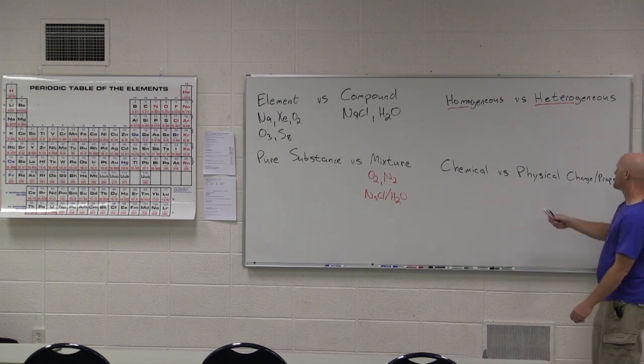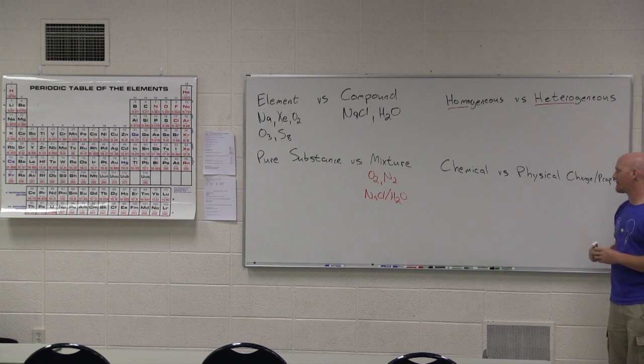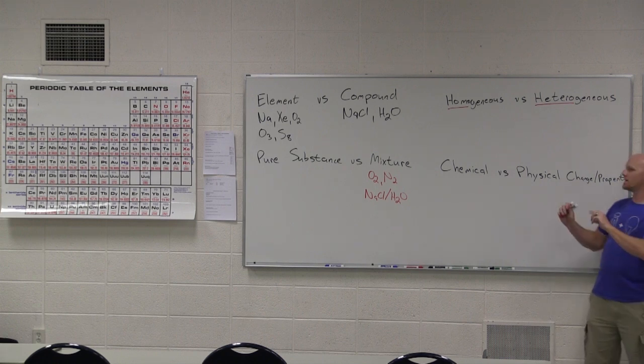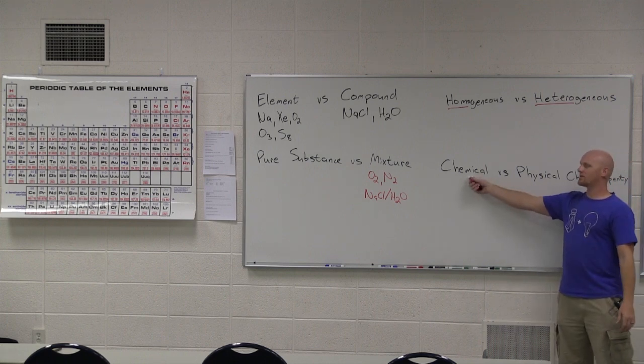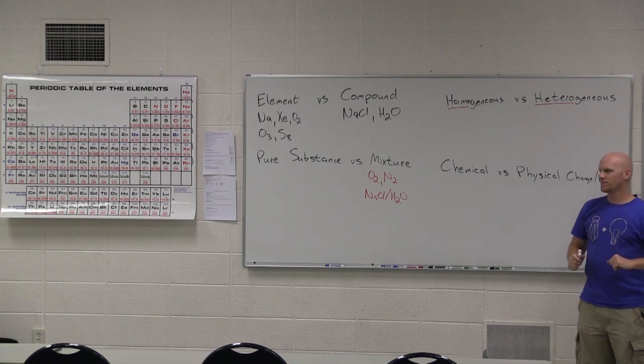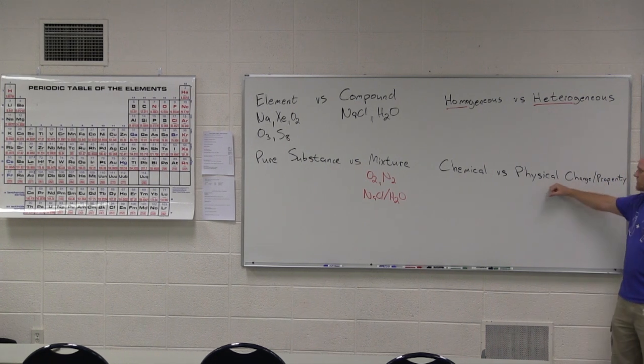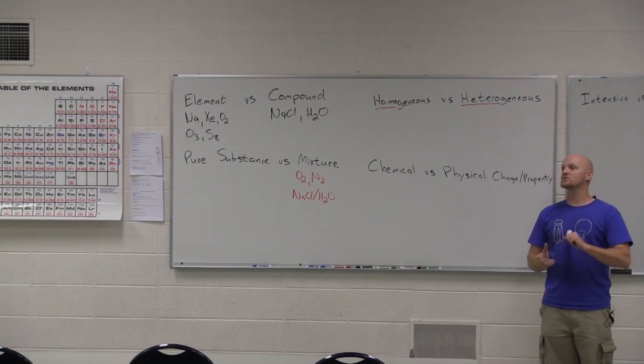Next on the docket, chemical versus physical changes and chemical versus physical properties. How do I tell the difference? Basically, the result of a chemical change is that one substance has been converted into a different substance. Whether it's an element turned into a different compound, or one compound turned into a different compound, or something like that, the substances have been changed, whereas a physical change involves a change, but it doesn't actually change the substance itself.